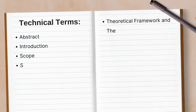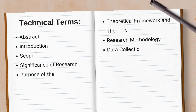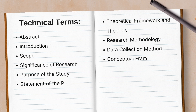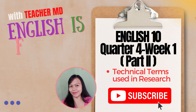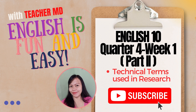And so, we are done. Remember all these technical terms for you to have a well-written research paper: Abstract, Introduction, Scope, Significance of Research, Purpose of the Study, Statement of the Problem, Hypothesis, Potential Outcomes, Theoretical Framework and Theories, Research Methodology, Data Collection Method, Conceptual Framework and Concepts, Results, Questionnaires, Surveys, and References. For more videos, do not forget to like and subscribe. Thank you for watching. Have a great day ahead!